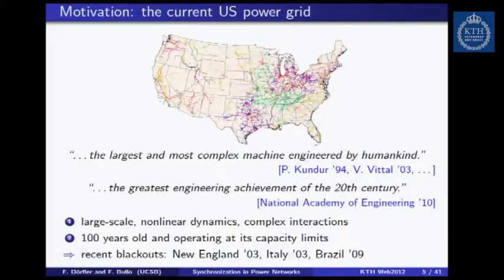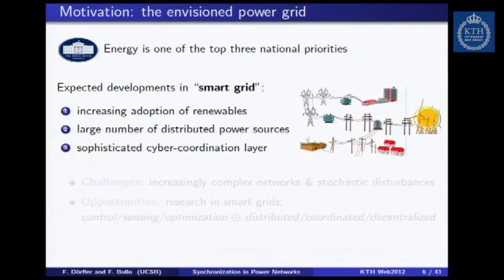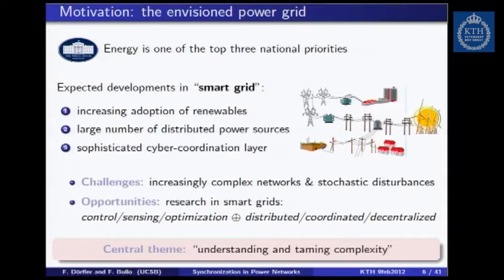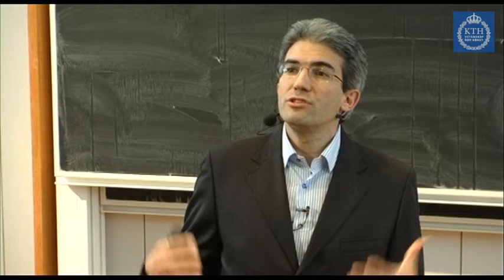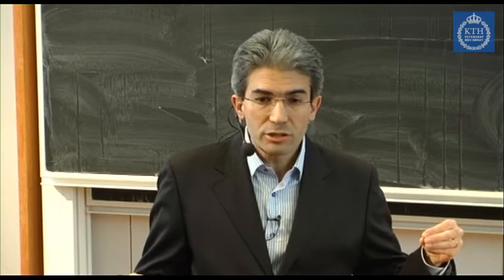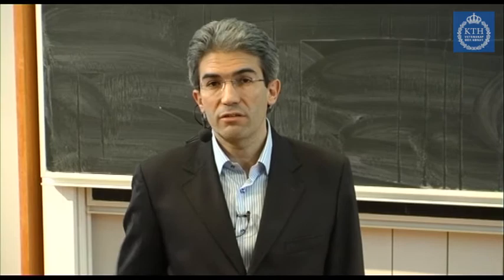There are a lot of interesting power systems blackouts with this hundred-year-old system. In the United States this has been the subject of a lot of attention. There is increasing adoption of renewables, which is adding stochasticity. There's a large number of distributed power sources to integrate. Overall we're trying to add control, sensing, and optimization — designing a smart cyber-physical layer on top of the power network. What we're dealing with is the complexity of this large-scale system, which has complicated dynamics at each node, complicated interconnections, integration of control, sensing, and communication. The physics itself is nonlinear.